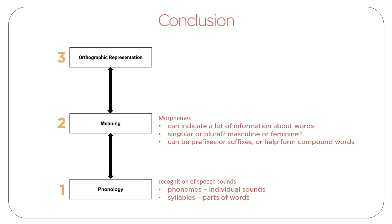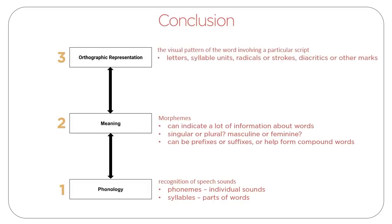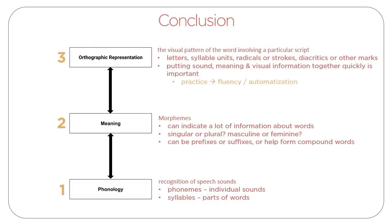The third is orthographic representation — the visual pattern of the word involving a particular script. In different languages this will involve letters, syllable units, radicals or strokes, diacritics, or other marks and features. Putting sound, meaning, and visual information together quickly is important, and to do this we need to practice in order to attain fluency or automatization. Finally, in order to learn to spell, we must learn eye-hand coordination, which helps us write words in the script we have learned.